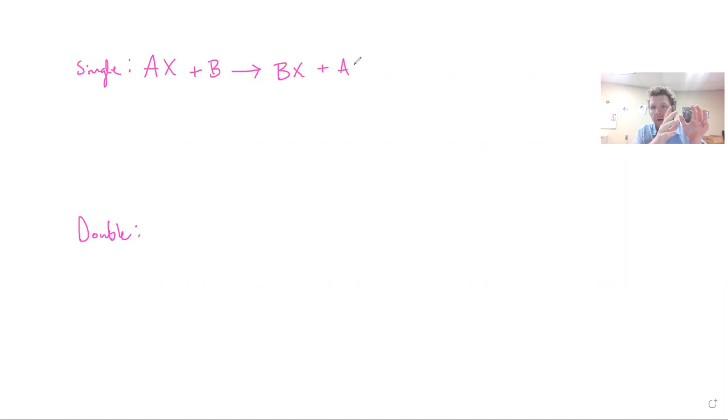So essentially what you have there is you have a compound that reacts with an atom. And then you produce a new compound and isolate that one atom. So what you've got here is basically A and B switching spots. So you can probably find one of these through a Google image search or something like that, but make sure that it follows the same model.